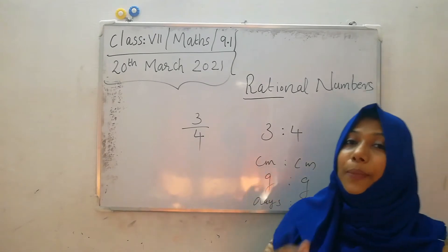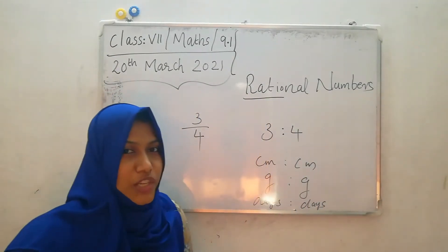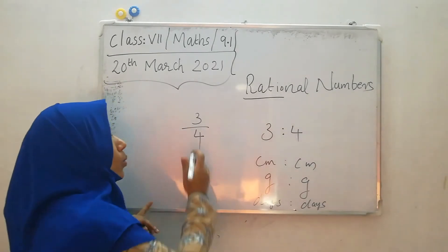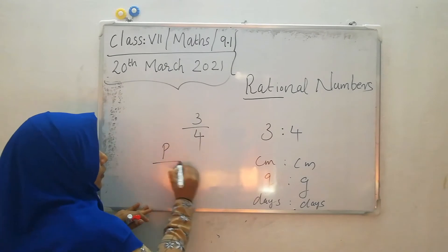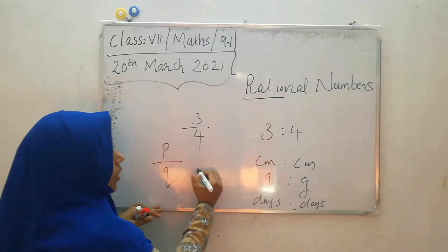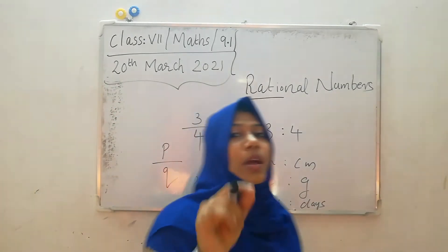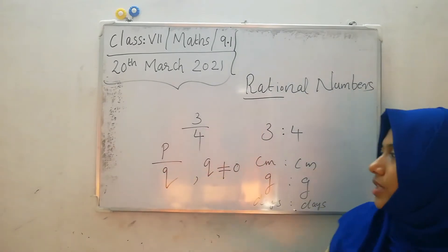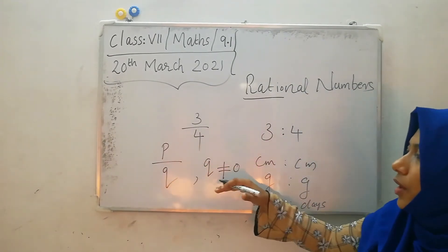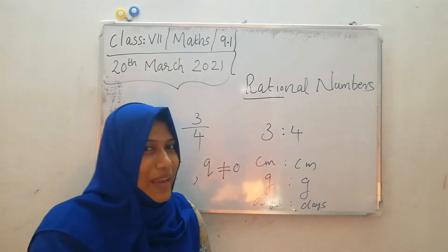This type of representation is not simply rational numbers. A rational number is a number which can be represented in the form P by Q, where Q is not equal to 0. So the expression P by Q where Q is not equal to 0 is known as a rational number.